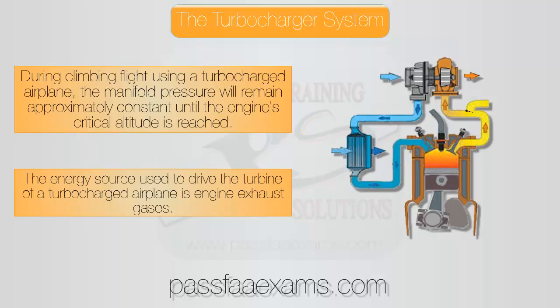Climbing from there will decrease the air density inside the carburetor and therefore the power output of the airplane. Once the pilot has set the desired manifold pressure, virtually no throttle adjustment is required with an increase of altitude, or at least again until the critical altitude is reached.